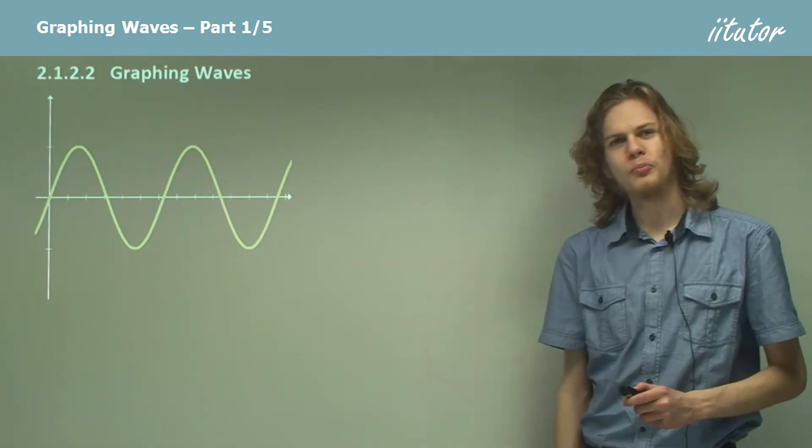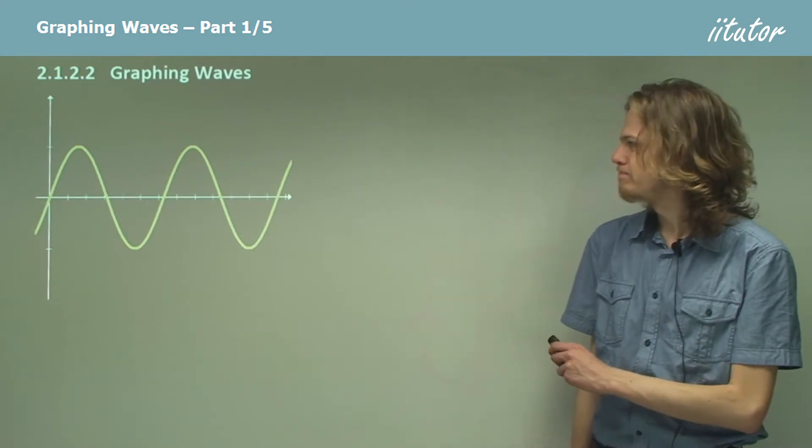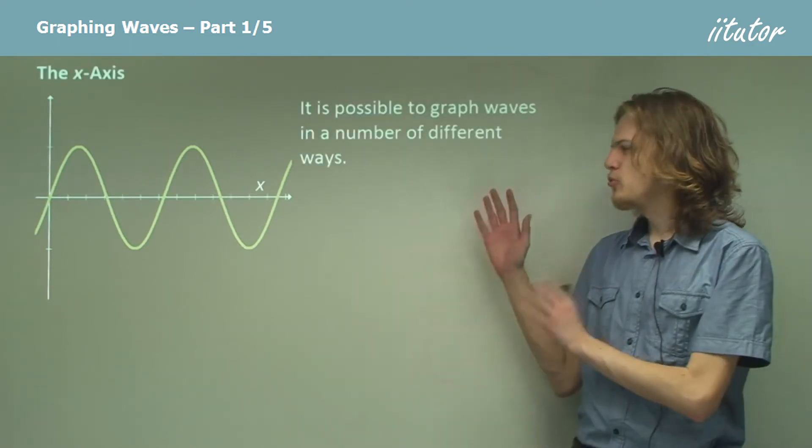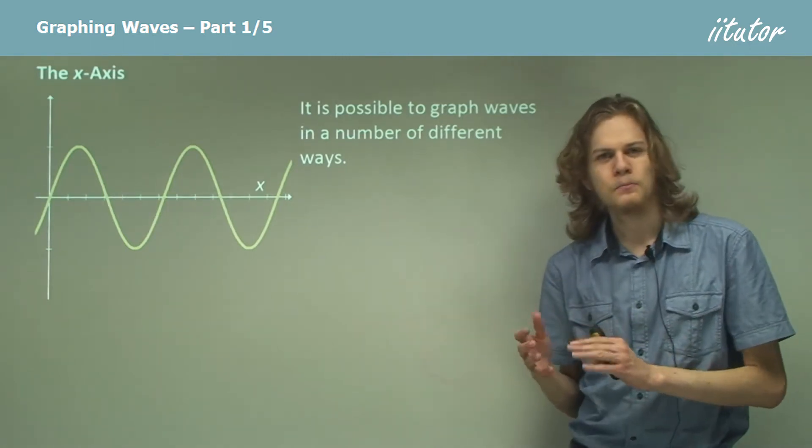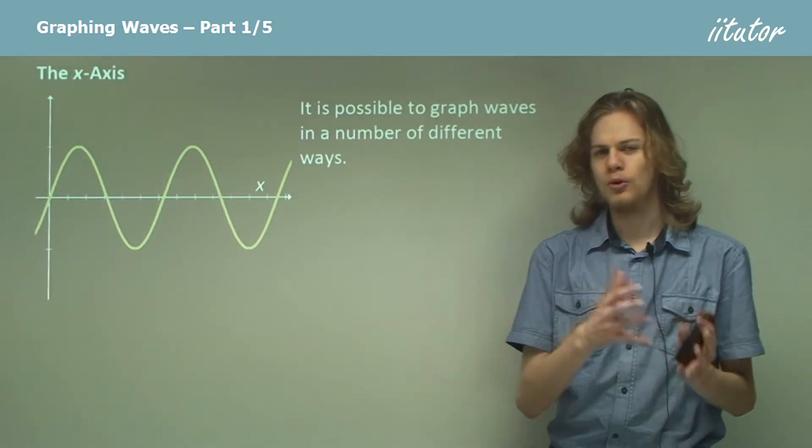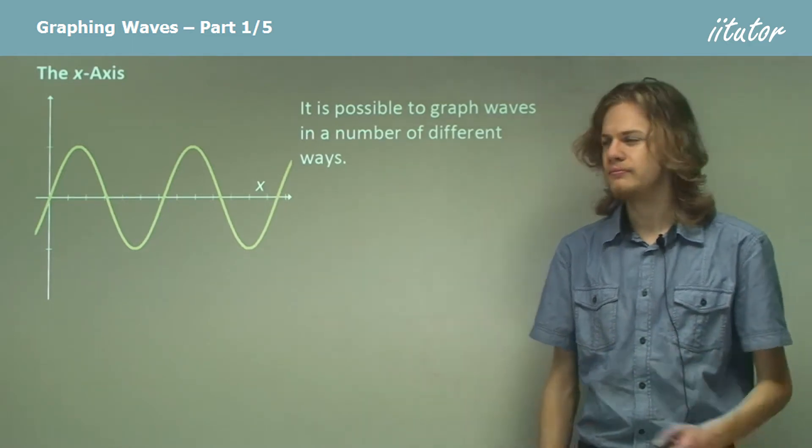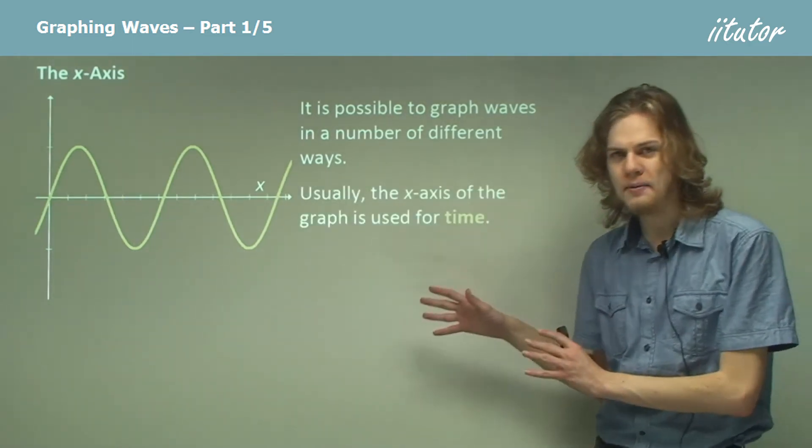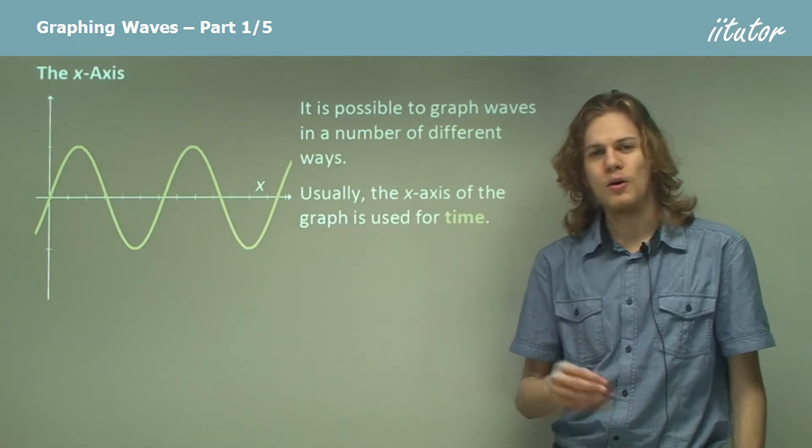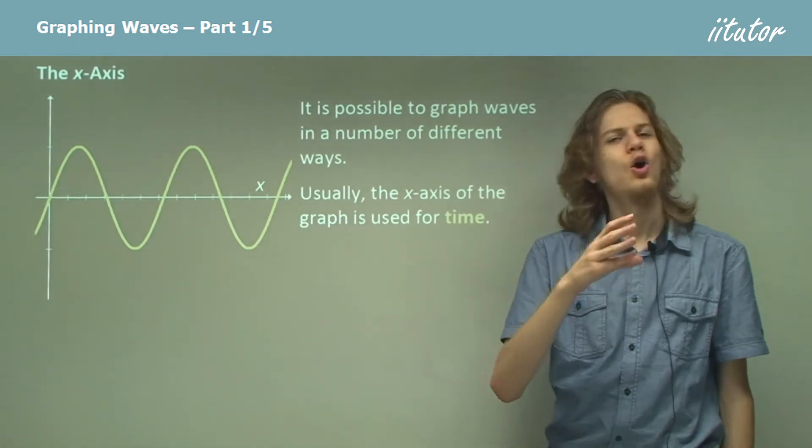So we'll start off with what's put on the x-axis. Now we can graph things in a number of different ways, which means that the x-axis can be mapped to a number of different properties of the wave. Usually we use it for time, so we measure how a particular part of the wave varies over time.